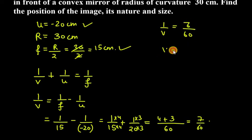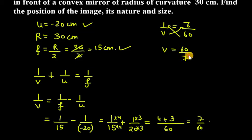Now using cross multiplication, 60 comes to the numerator and v comes up. So v equals 60 over 7, which is approximately 8.6 cm.